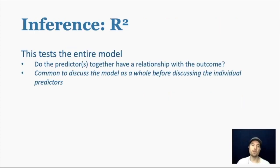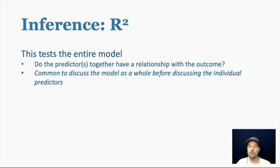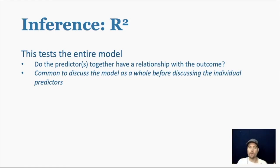When making inference about R-squared, this tests the entire model. The question it answers is: do the predictors together have a relationship with the outcome? For example, do all these different measures of socioeconomic status predict this outcome? R-squared is going to answer that question. It is very common to discuss a model as a whole before discussing individual predictors — even if the whole model isn't the main interest, you may want to report that it explained the outcome before going into the individual coefficients.